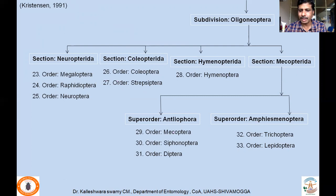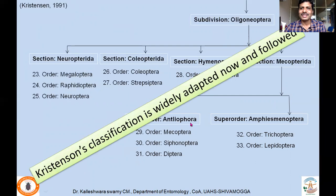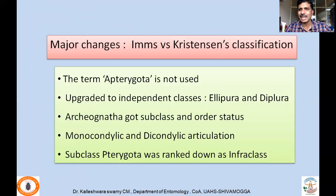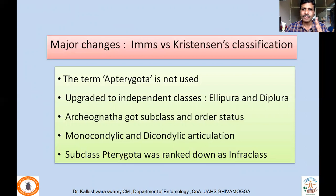Lepidoptera are actually the most recently evolved insect order. The Christiansen classification is widely accepted and followed. It was given in the year 1991 but it took about more than 10 years for wide agreement among taxonomists and about 10 to 15 years for full acceptance. Now it is being followed worldwide as the most updated recent classification.